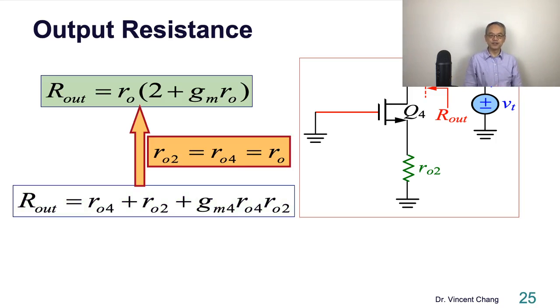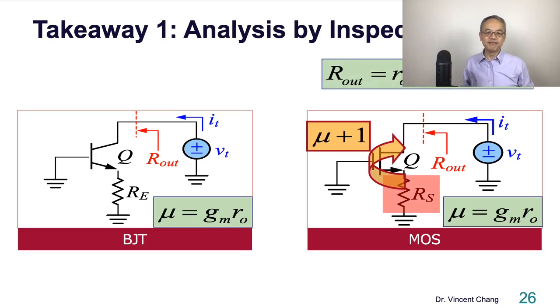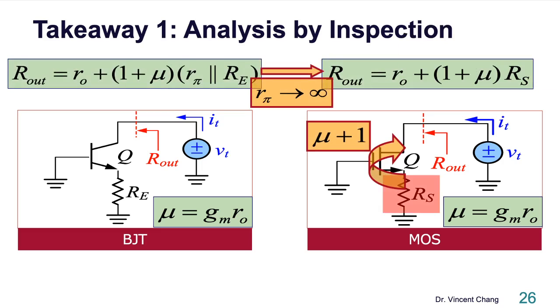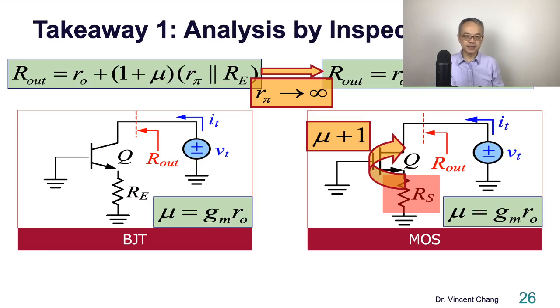So here's the output resistance. Listen: analysis by inspection. Try to connect both sides, the left-hand side and the right-hand side. Let me ask you this: Why is R_O plus R_S wrong? That's the question I left you in the previous lecture video. Where is it going wrong? What's the key point?